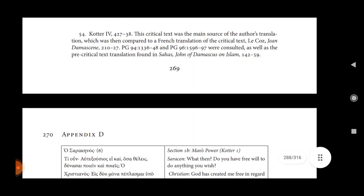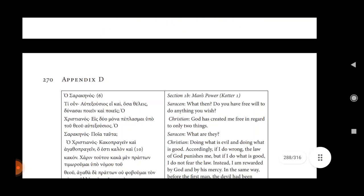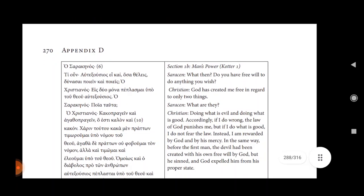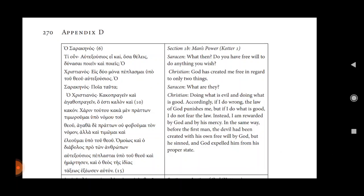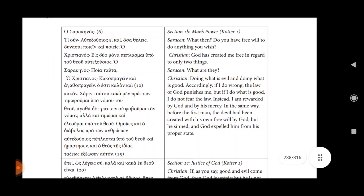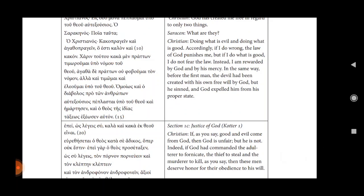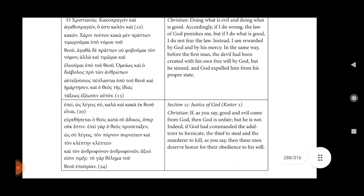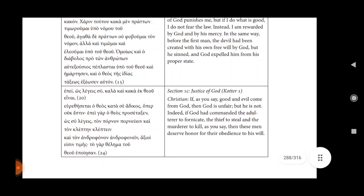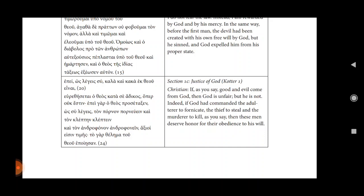Section 1b, Men's Power. Saracen: What then? Do we have free will? Do I do anything that I wish? Christian: God has created me free in regard to only two things. What are they? Doing what is evil and doing what is good. Accordingly, if I do wrong, the law of God punishes me, but if I do what is good, I do not fail the law. Instead, I am rewarded by God by his mercy in the same way. Before the first man, the devil had been created with his own free will by God, but he sinned, and God expelled him from his proper state.